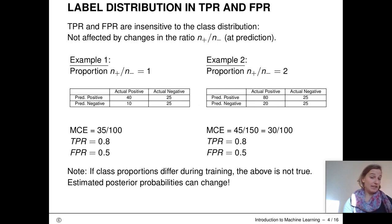It is the same classifier, so we should have the same performance in both cases, right? However, if we look at the misclassification error, we get different values. It seems that the classifier is better in example one, just because of class imbalance. If it is not immediately clear to you why this is the case, stop the video now, look up the formula for the MCE and compute it yourself.